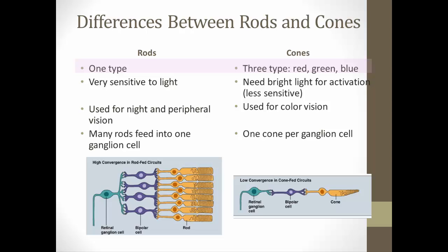The three cone types are named red, green, and blue because they're more sensitive to those colors. Rods are very sensitive to light — it doesn't take much light to trigger phototransduction — whereas cones need a lot more light to be activated. Cones give us color vision, whereas rods are used mostly at night and in peripheral vision, where we see in black and white.